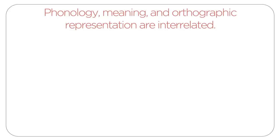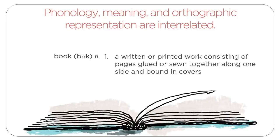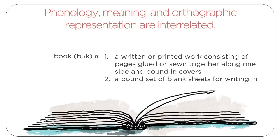Phonology, meaning, and orthographic representation are interrelated in every language and script. Think about how words are presented in a dictionary. For example, let's look at the word 'book': (1) a written or printed work consisting of pages glued or sewn together along one side and bound in covers; (2) a bound set of blank sheets for writing in. There are three important types of information given in this dictionary entry.